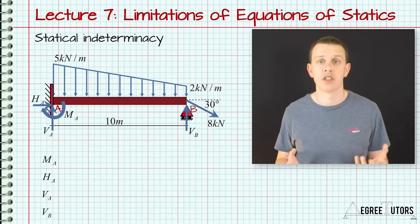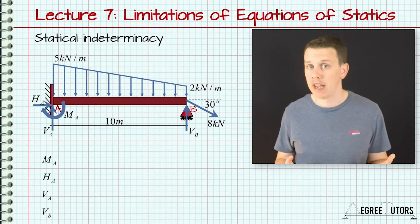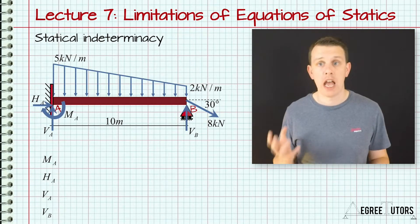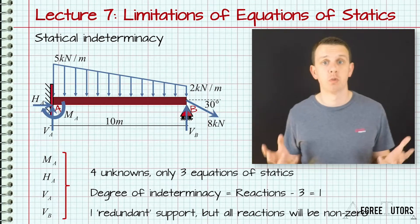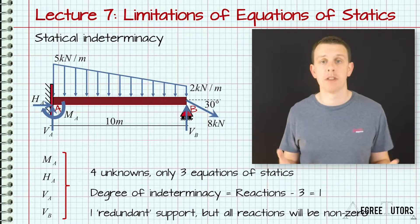In the last case we had four reactions. So if we have four reactions and three equations of equilibrium, we can say our structure is statically indeterminate to one degree. We can't determine the reactions using the equations of statics.